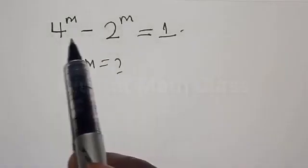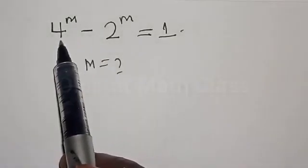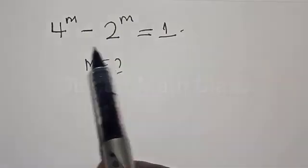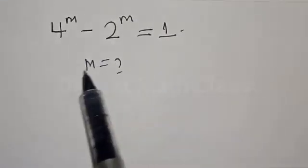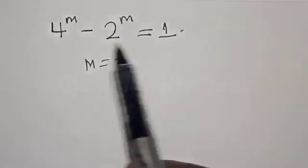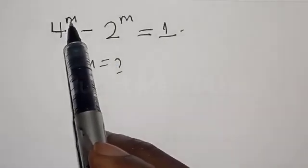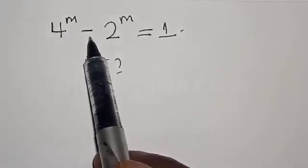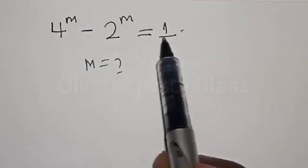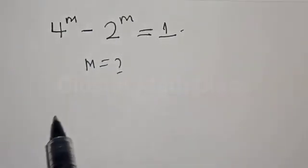Welcome to my class, the Olusta class. In today's class, we want to look at how we can quickly find the value of m from this given equation: 4 raised to power m minus 2 raised to power m is equal to 1.